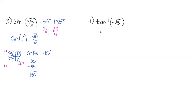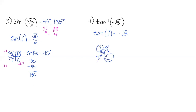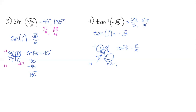Number 4: tan inverse of negative √3. This asks: tan of what angle gave me negative √3? If tan is negative, I can't be in the first or third quadrant, so I'm in quadrant 2 and quadrant 4. Working directly in radians, the reference angle for √3 is π/3. In the second quadrant: 3−1=2, so 2π/3. In the fourth quadrant: 3×2−1=5, so 5π/3. Those are my two answers.